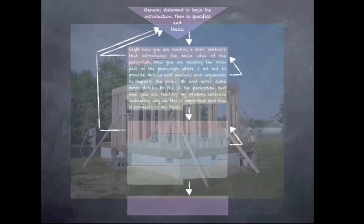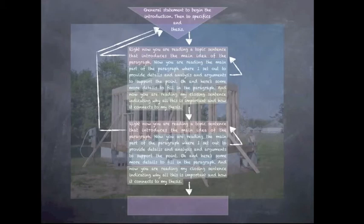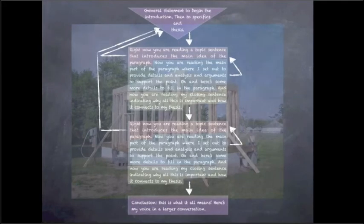The introduction sets the stage by laying out the context. The topic sentences support the main thesis. The details of the paragraph support the topic sentences. The paragraphs connect to each other, flowing from point to point. And the conclusion returns to the context and places the importance of the essay in a larger conversation of ideas.